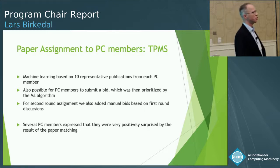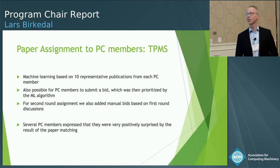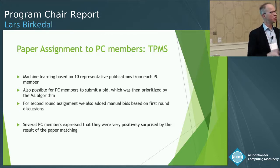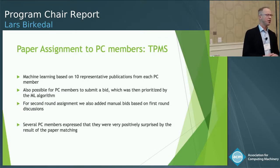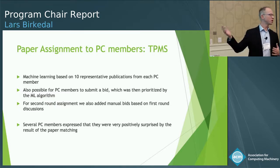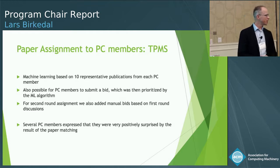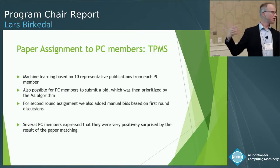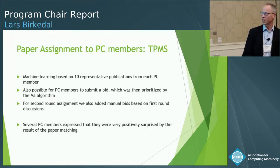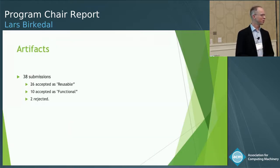For paper assignment, we used the Toronto paper matching system — a machine learning-based system. Every PC member was asked to submit ten representative publications as input to the algorithm. We also made it possible for PC members to bid on papers, though it varied quite a bit; some people bid on just five papers, while others gave a full bid. We prioritized those bids over the algorithm's assignments. For the second round, we added manual bids based on first-round reviews and discussions. Most PC members were quite happy with how this worked, and several were positively surprised, saying it was better than what they had done before themselves.